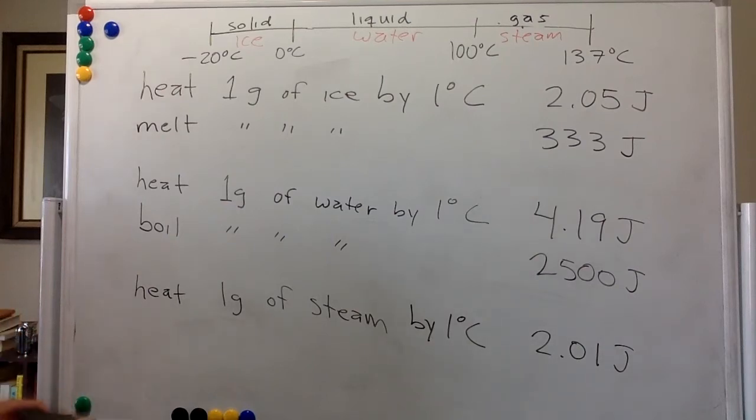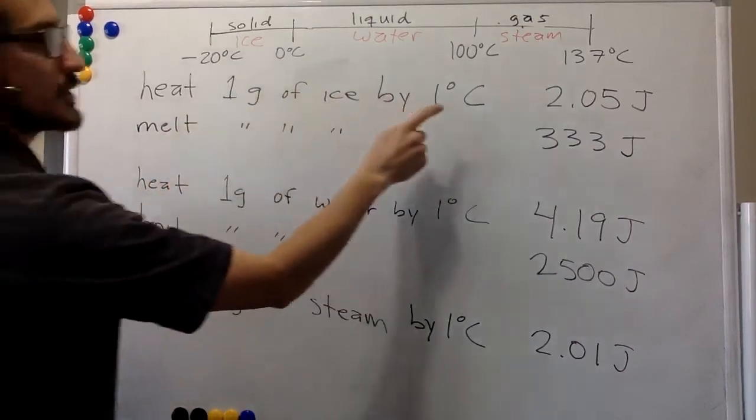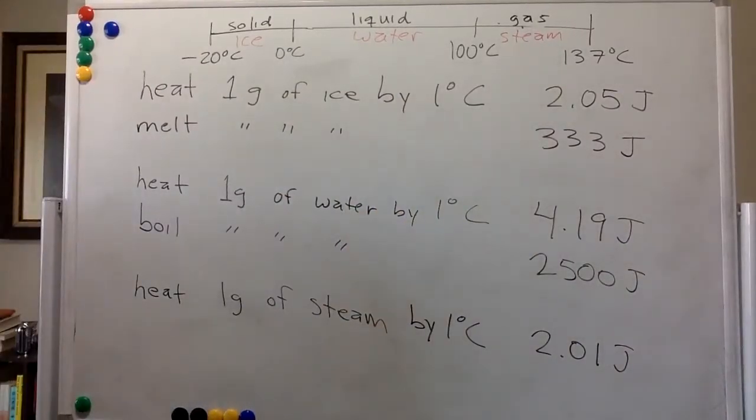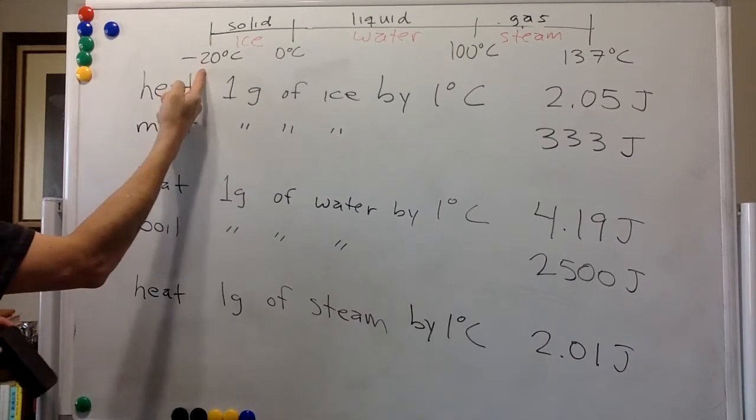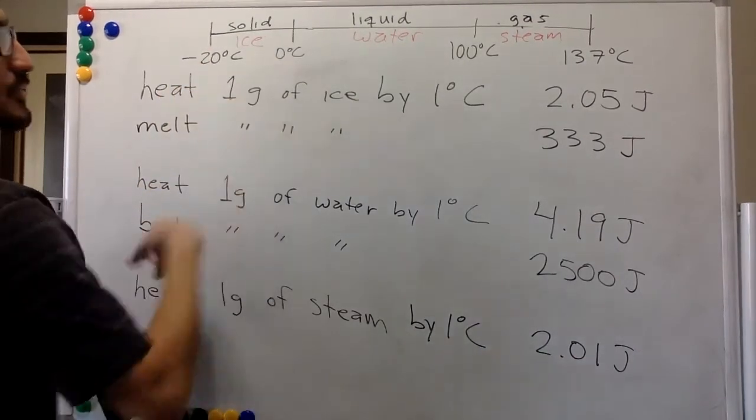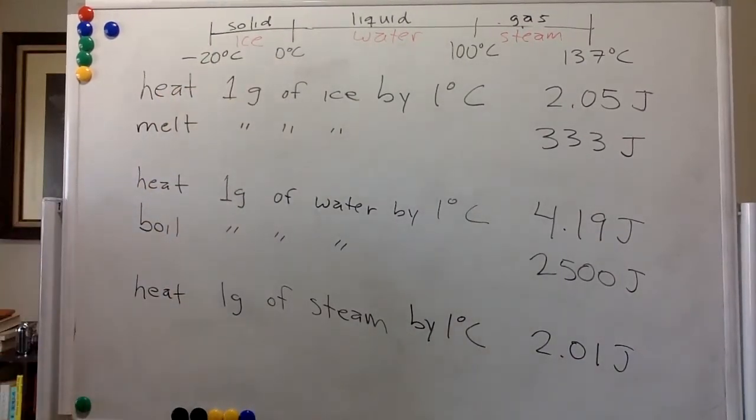OK, so if we want to heat one gram of ice by one degree Celsius, we need 2.05 joules. So in order to bring it from negative 20 Celsius to zero Celsius, we're going to need...